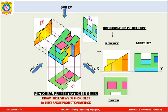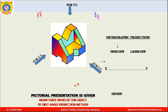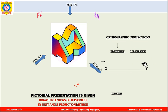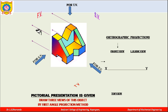Now we will see one more problem. This is the pictorial representation of another object, and here also we are asked to draw the three views using the first angle method of projection. We draw the XY line, front view above, top view below, and left-hand side view to the right. This is the direction of viewing for the front view, and your ray of sight passes like this.